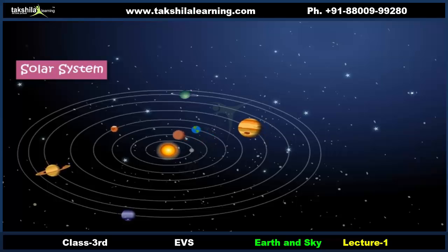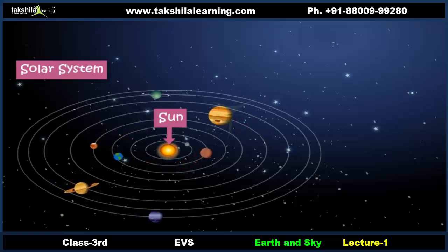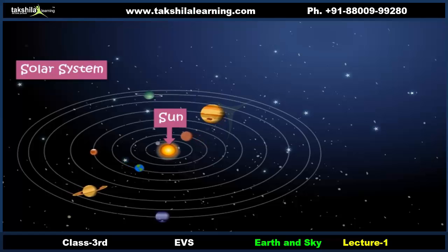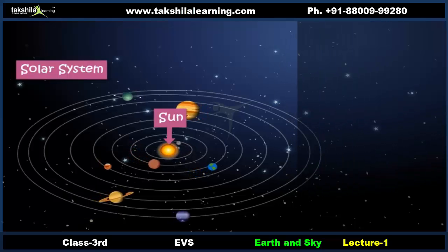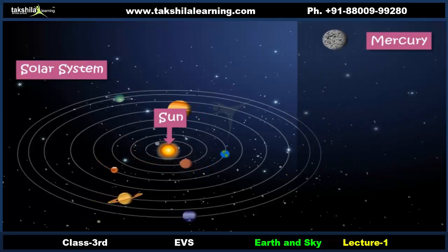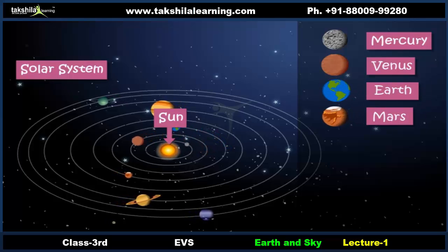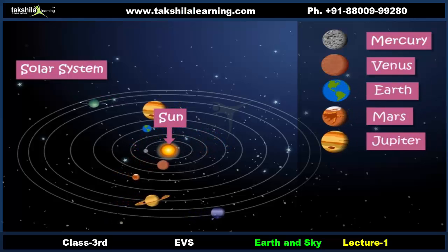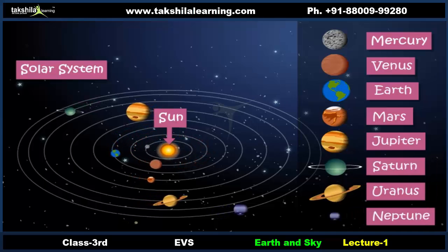We live in the solar system. The solar system is the family of the Sun and its eight planets. In the solar system, the Sun is placed at the center and the eight planets revolve around it. The eight planets are Mercury, Venus, Earth, Mars, Jupiter, Saturn, Uranus, and Neptune.